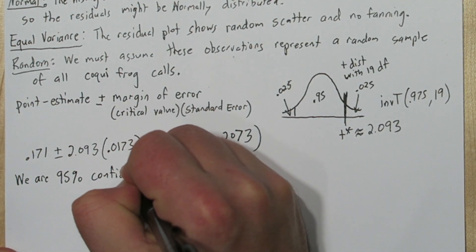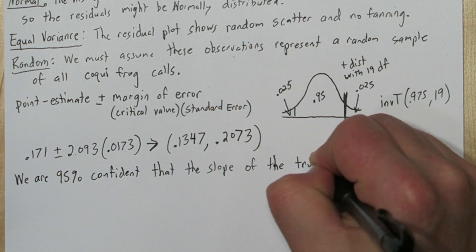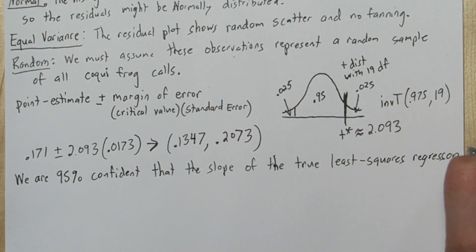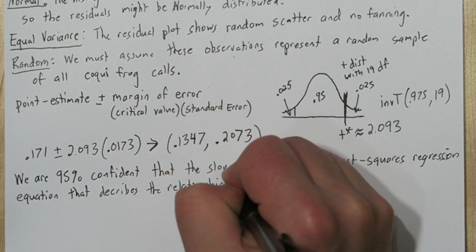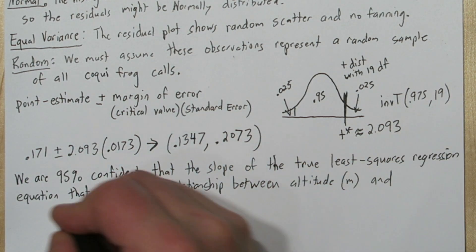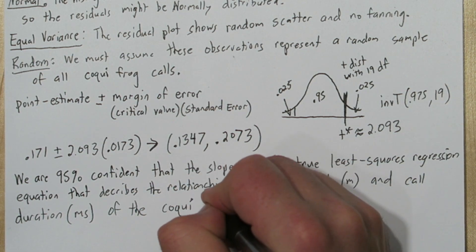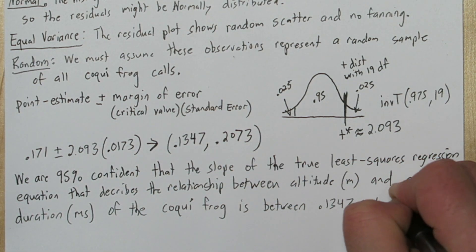Let's interpret this interval. We are 95% confident that the slope of the true least squares regression equation that describes the relationship between altitude and call duration of the Coqui frog is between 0.1347 and 0.2073.